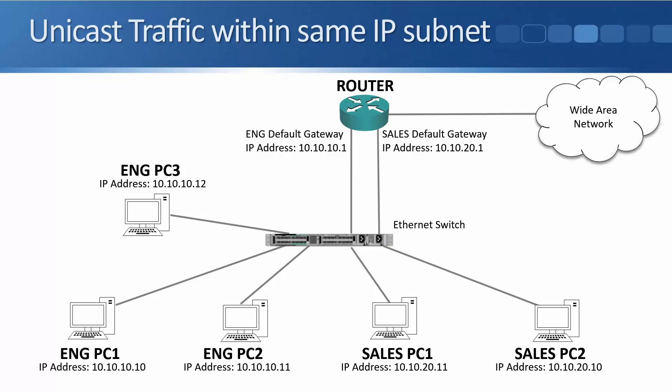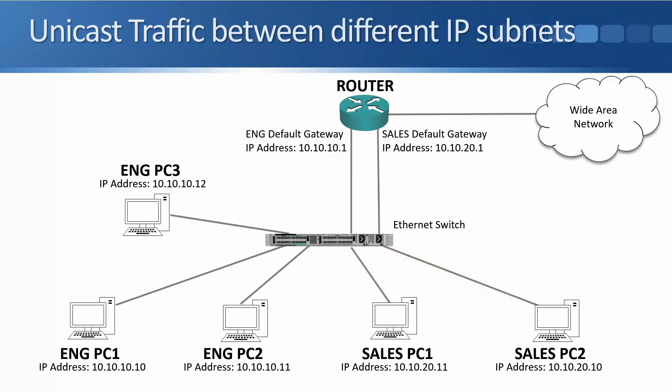If we send unicast traffic within the same IP subnet — so sales PC2 at 10.10.20.10 wants to communicate with sales PC1 at 10.10.20.11 — it sends traffic with a destination IP address of 10.10.20.11. That comes into the switch, and as long as the switch has already learned the MAC address for sales PC1, the switch will just send it out the port that sales PC1 is connected to. This is very good for performance and security — traffic is only going exactly where it needs to go.